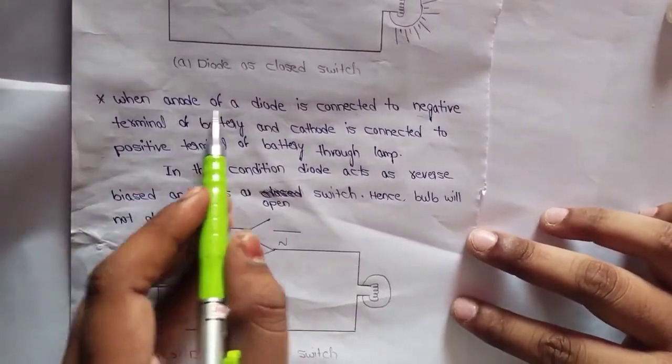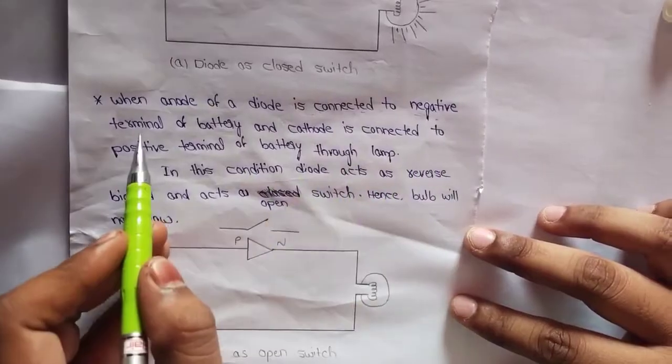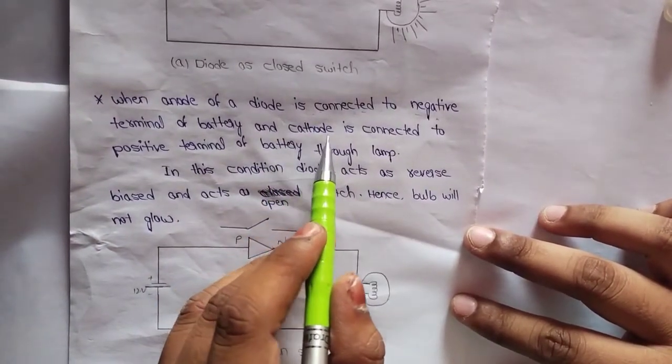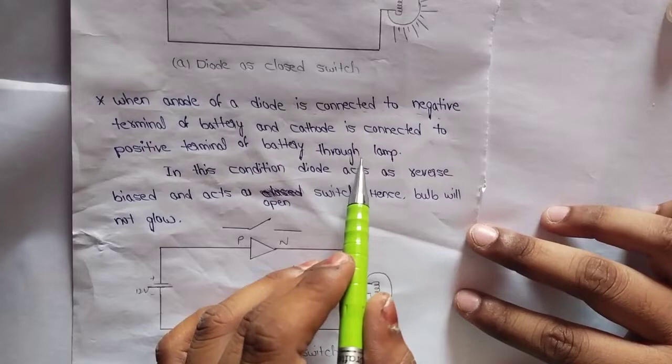When the anode of a diode is connected to negative terminal of a battery and cathode is connected to positive terminal of a battery through lamp.